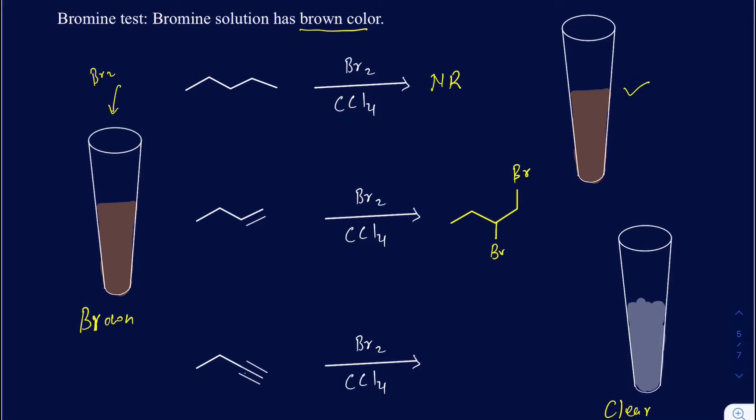In case of an alkyne, since you have two pi bonds in there, you can actually add four bromines. So you'll have a tetrahalogenated or tetrabrominated compound being made there. As soon as your bromine is reacted, you don't have any bromines left in the original solution. That's why it goes clear. But if your bromine doesn't react like in case of alkane, then your brown color will persist.